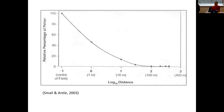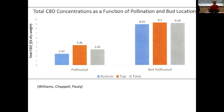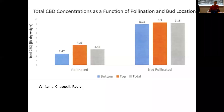At 10,000 meters away, there's still potentially 20% of the pollen. The reason that's important is because if your flowers are pollinated, as Shelby mentioned, the percentage of CBD reduces drastically. You can see that flowers that were pollinated have significantly lower percentage of CBD than those that were not pollinated.